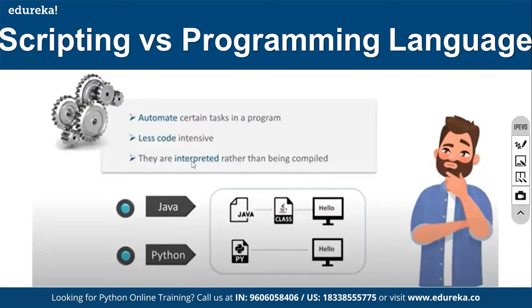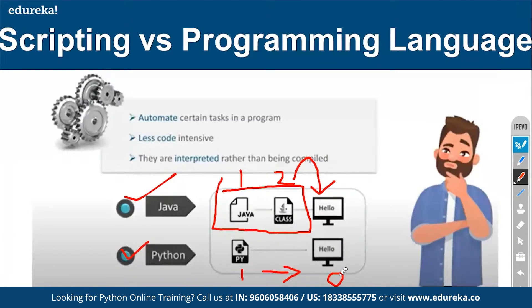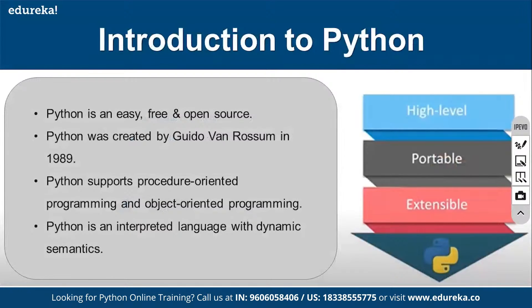To understand this, consider two languages: Java and Python. Java has a two-step process — source code is compiled into a class file, then the class file is executed to get output. Python is different: source code is executed directly to get output. That's why Python is an interpreter language, not a compiled language. With an interpreter, you get output directly from source code without a separate compile step.